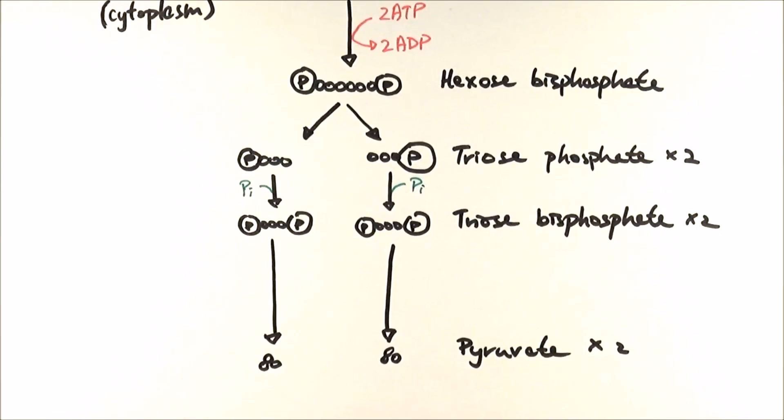In the final stage of glycolysis, triose bisphosphate is converted into pyruvate. We will look at a diagram to figure out what goes on in between. As you can see, pyruvate is missing two phosphate groups.